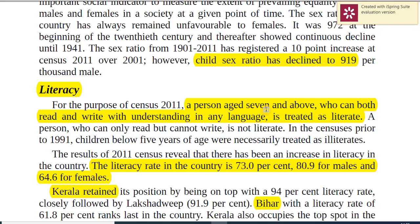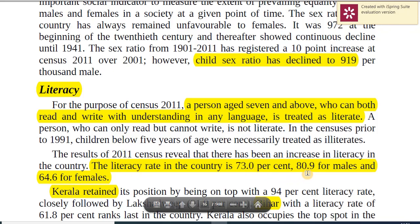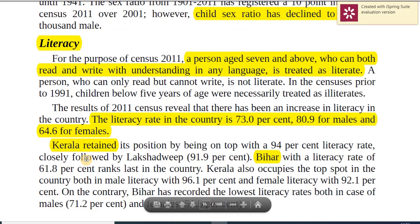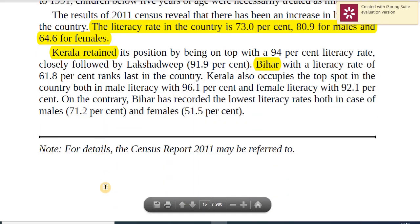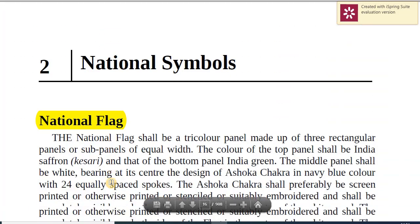Literacy rate stands at 73 percent overall — about 80 percent for males and 64 percent for females. Kerala is the highest literate state for both males and females. Bihar is the worst literate state for both males and females. So this is largely your first chapter — Land and People — and it gives you an understanding of how things work and on what basis things are structured.